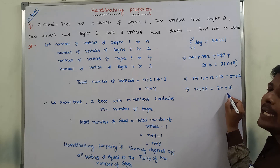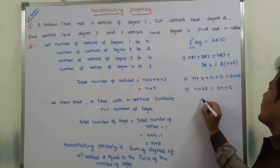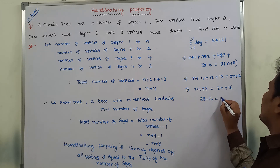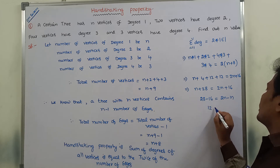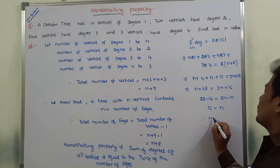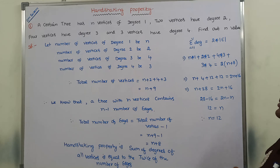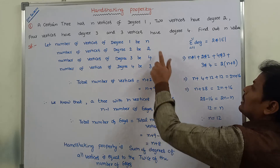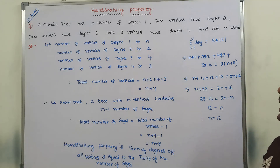Sending n to the right-hand side and 16 to the left-hand side: 28 − 16 = 2n − n. That gives 12 = n. Therefore n = 12, meaning 12 vertices have degree 1.